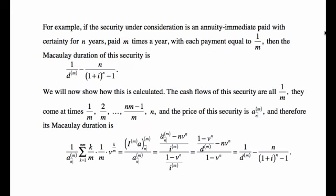Let's look at an example using the weighted average time to payment approach for Macaulay duration. Consider a security that is an annuity-immediate paid with certainty for n years, m times a year, with each payment equal to 1/m. The price is written as a-angle-n upper m, and we will prove that its Macaulay duration equals 1/d^(m) minus n divided by [(1 + i)^n − 1]. This is a really handy formula to memorize for the test.